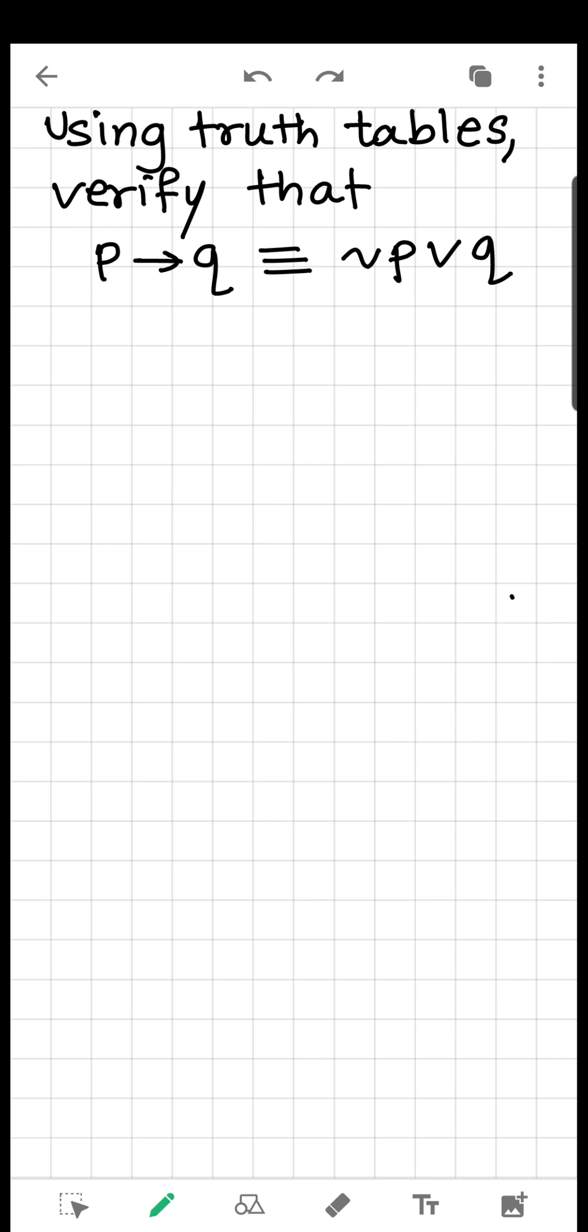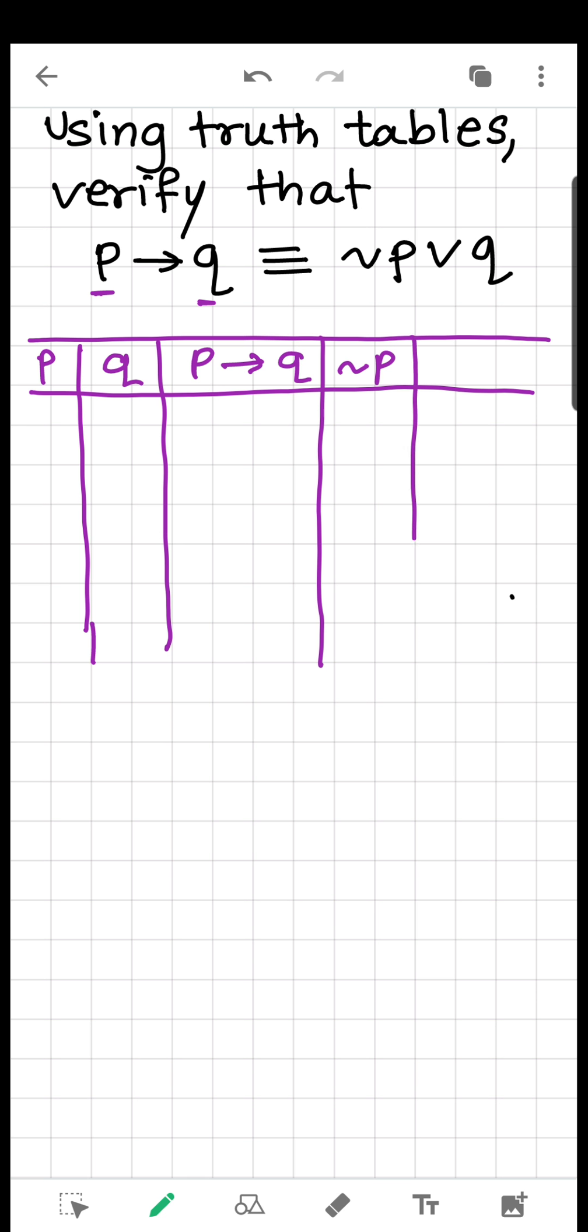Now, let's go to the question. Using truth table, verify that P implies Q is equivalent to not P or Q. Here it is specifically written truth table, so we will use truth table. In coming videos we will see other methods like using boolean algebra or logic algebra rules. Now, how many constituent statements are there? Two - P and Q. So let me write P and then Q. And then for P and Q's different possible scenarios we will find - we have to find P implies Q, that is our left hand side. Then we are going to need not P and then we will have to find not P or Q. This is our LHS, this is our RHS.